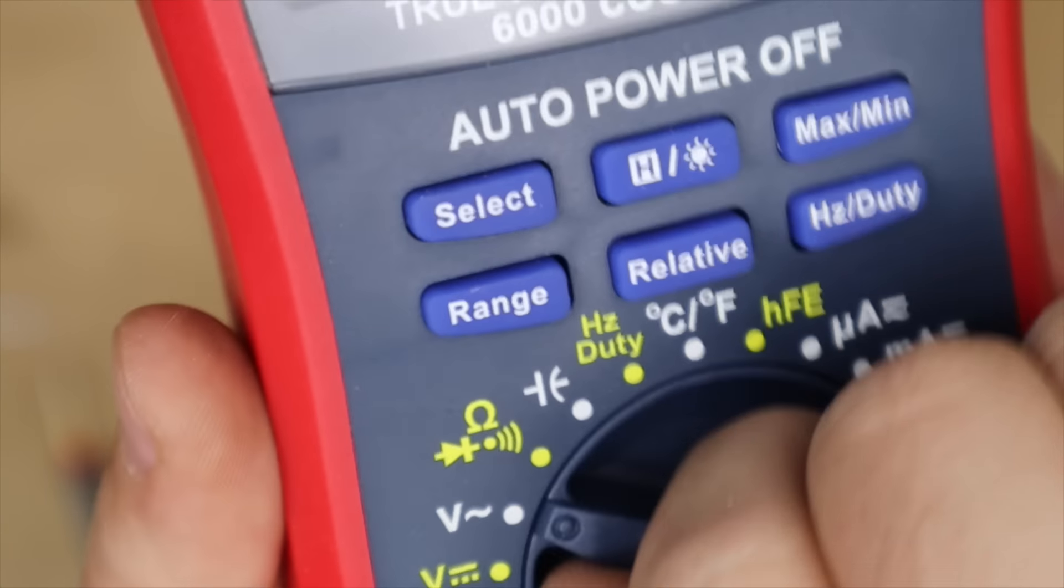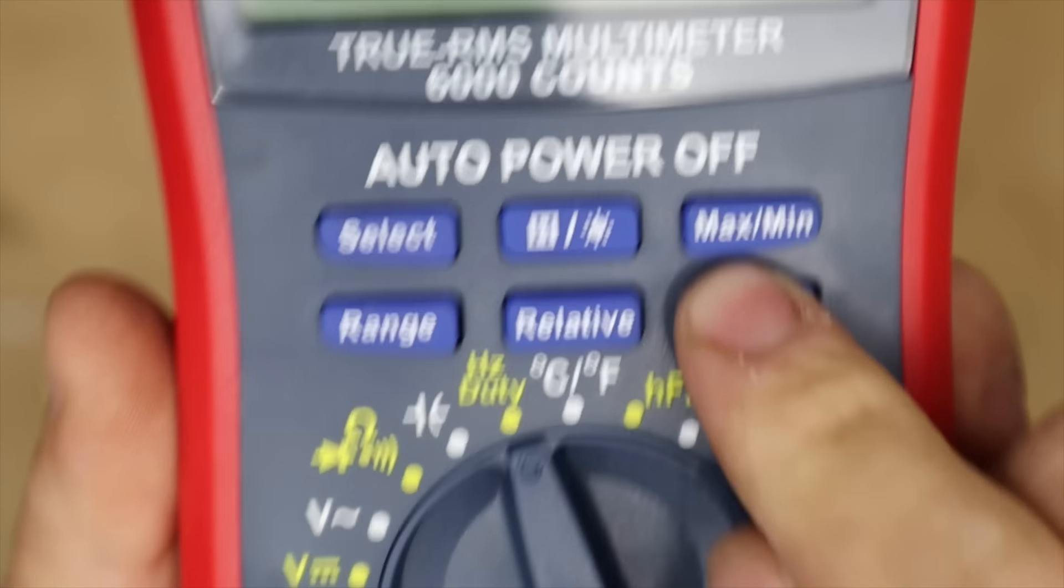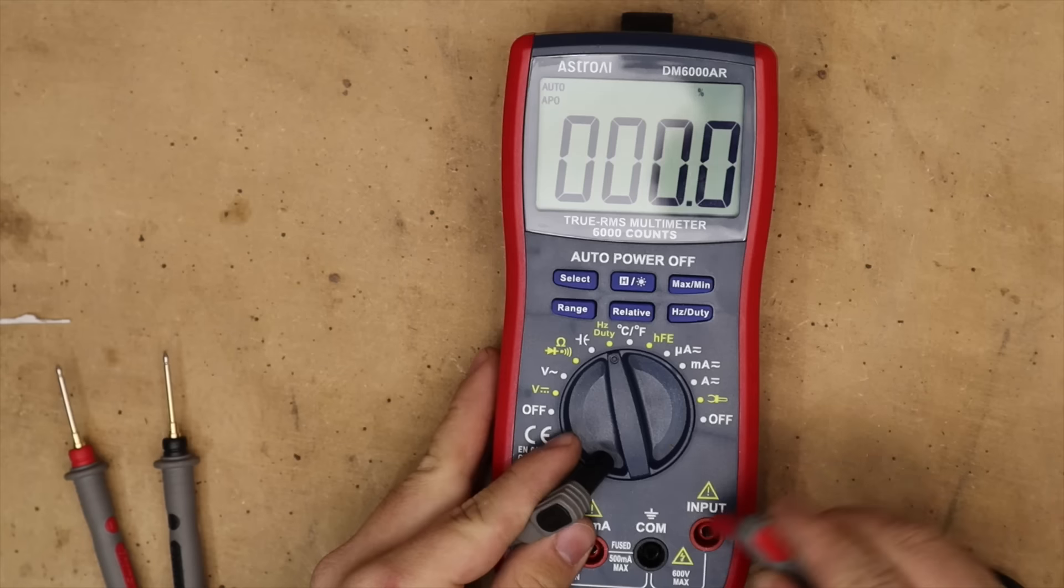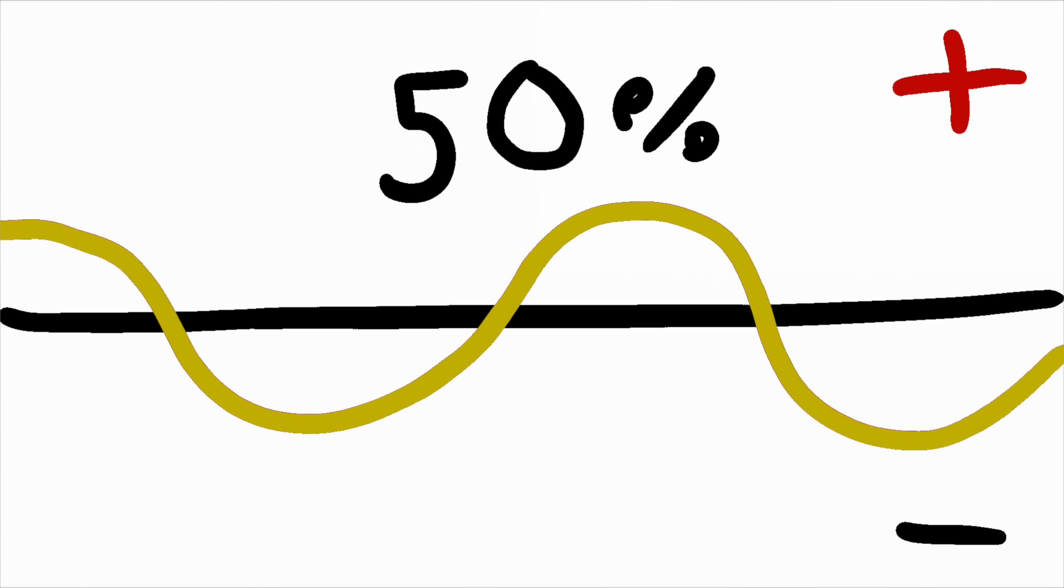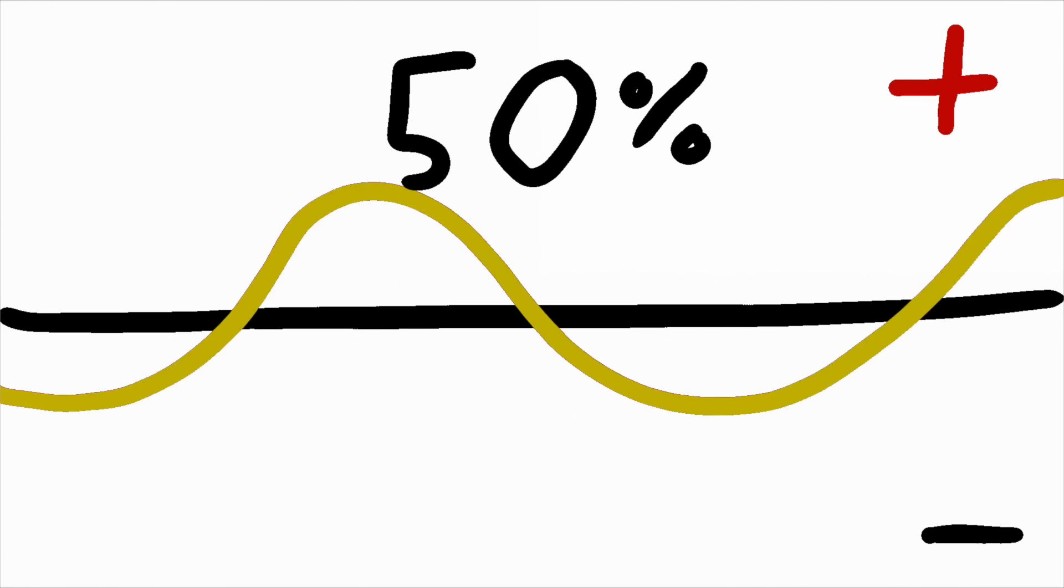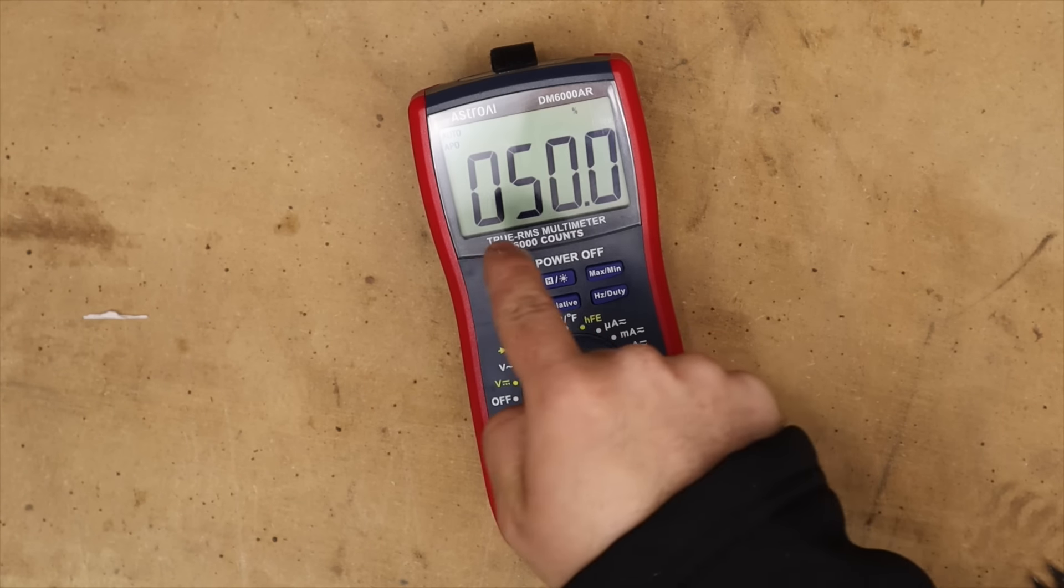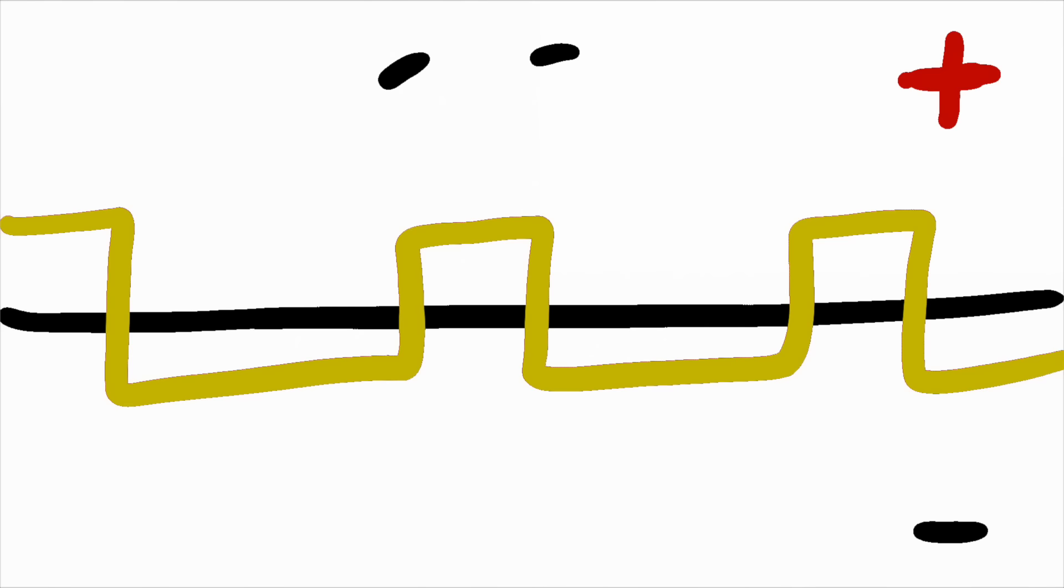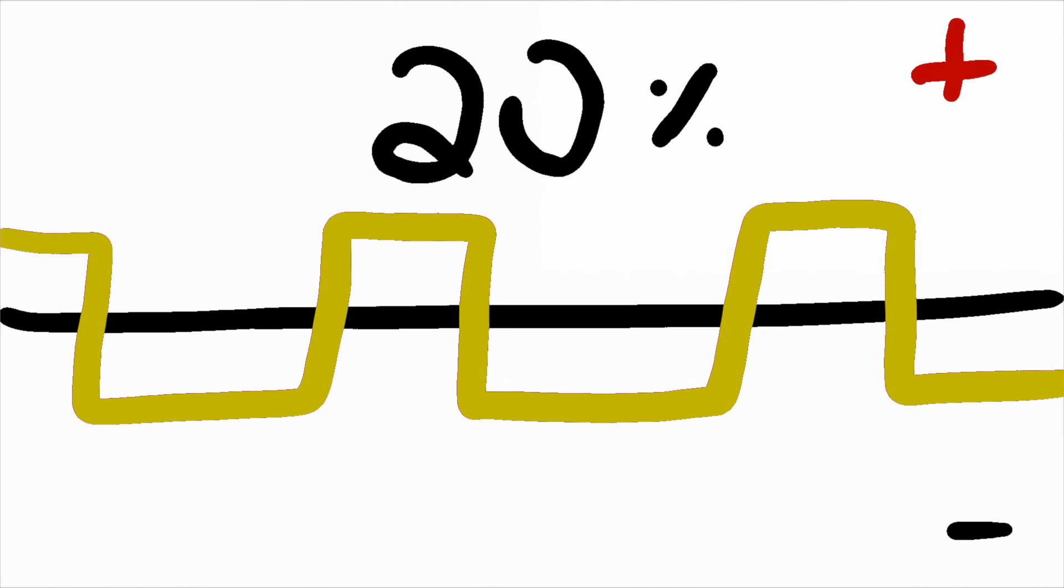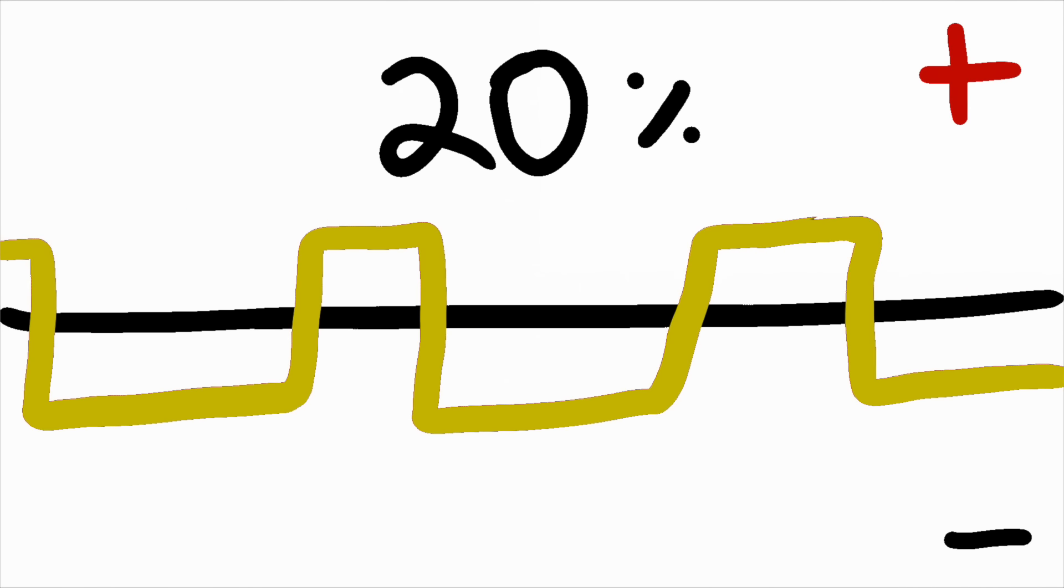Many multimeters will also say duty or have a percentage sign. This is known as duty cycle and this tells us what percentage of the time there's positive current. So when an alternating current is spinning you'll usually have 50% on and 50% off. In this case we have dead on 50%. There's other applications where you have square waves that aren't on 50% of the time.